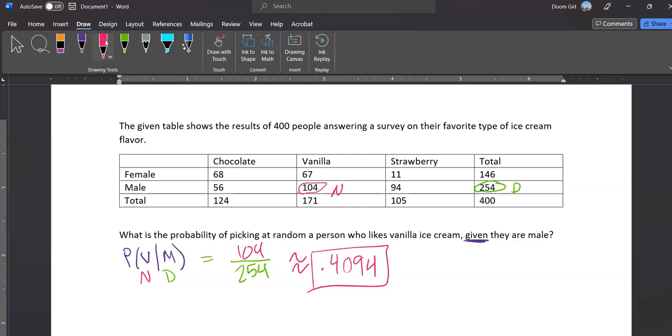Probability of picking a person at random who likes vanilla ice cream given they are male is about 0.4094, or if we want to turn that into a percentage, it's roughly 40.94%.